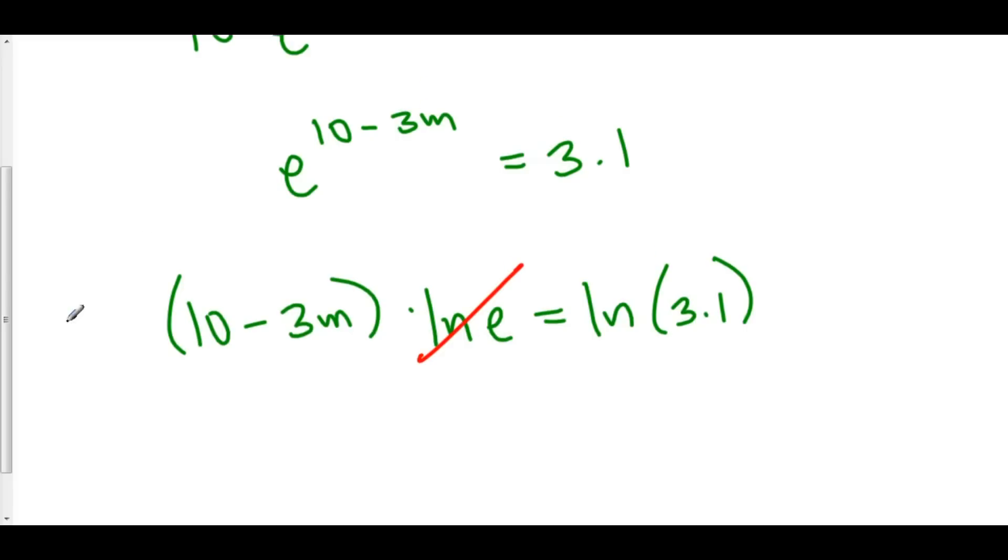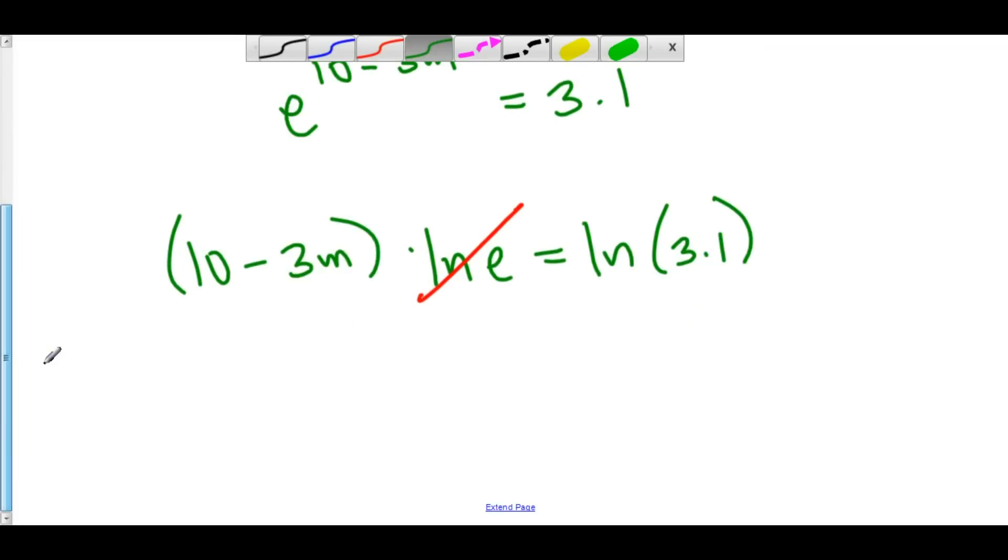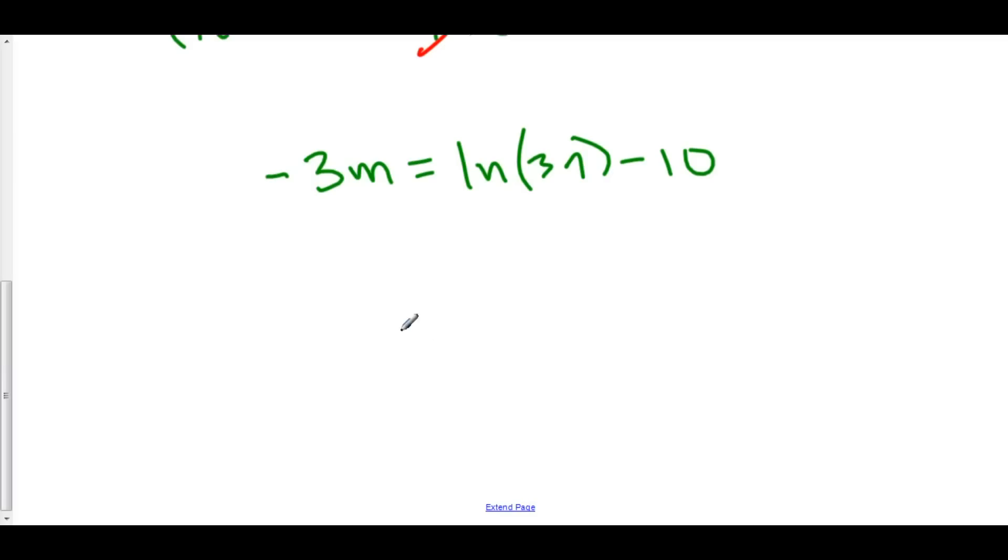We can subtract 10 from both sides. We now have negative 3m is equal to the natural log of 3.1 minus 10. And finally, we can divide everything by negative 3. And we have m is equal to negative 1 third times the natural log of 3.1 minus 10 thirds. And here we have solved for m.